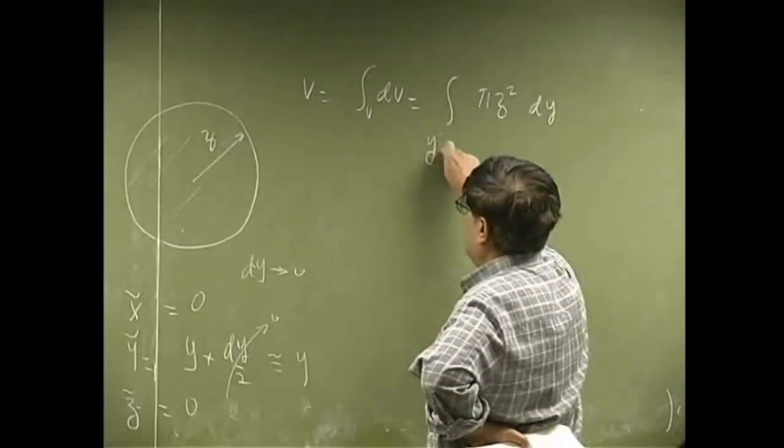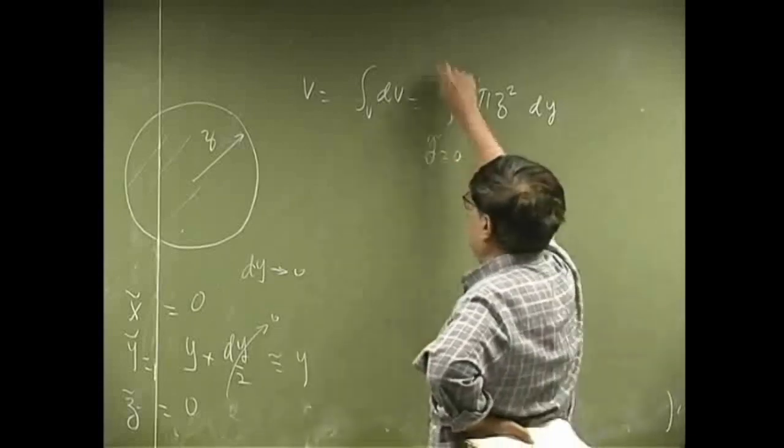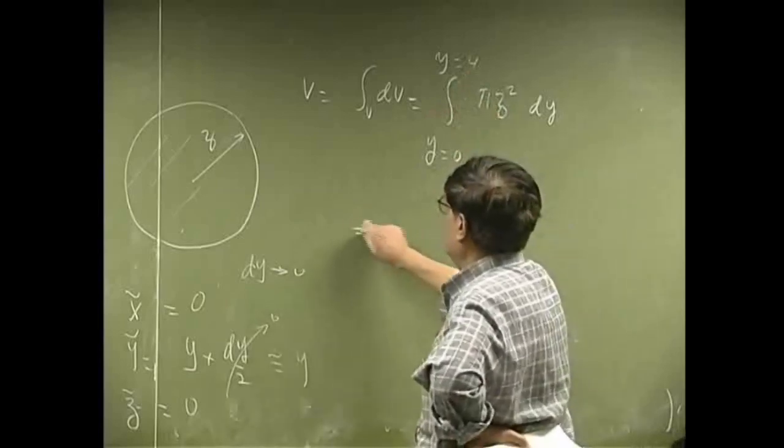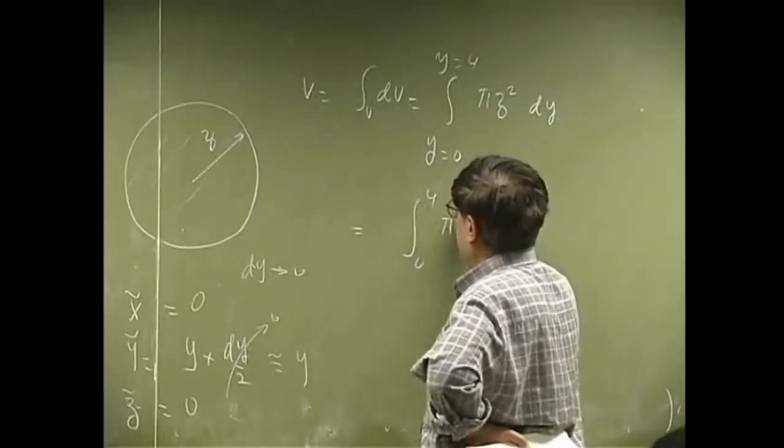Which means you have to go from y equals to 0, and you go all the way up to y equals to 4. So, this is from 0 to 4.